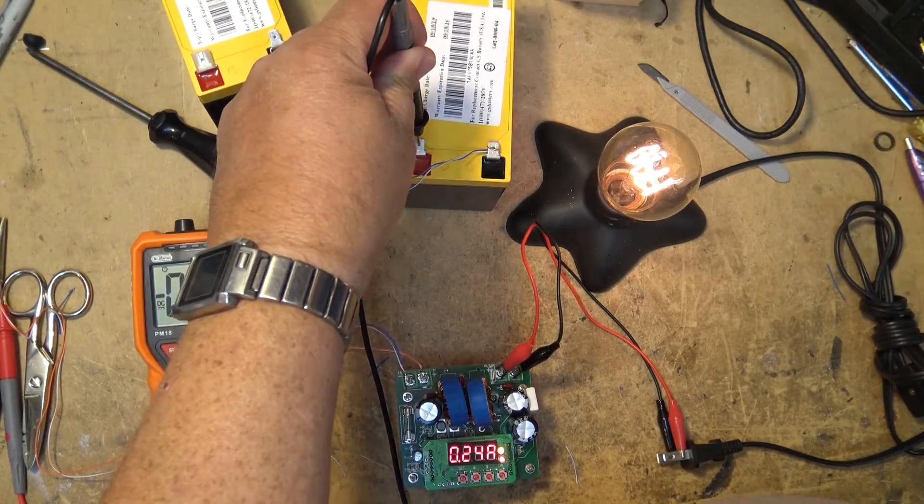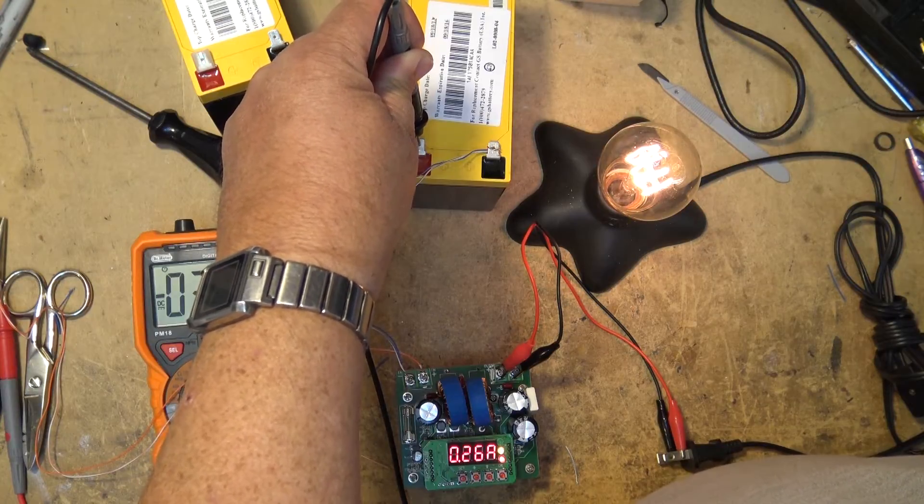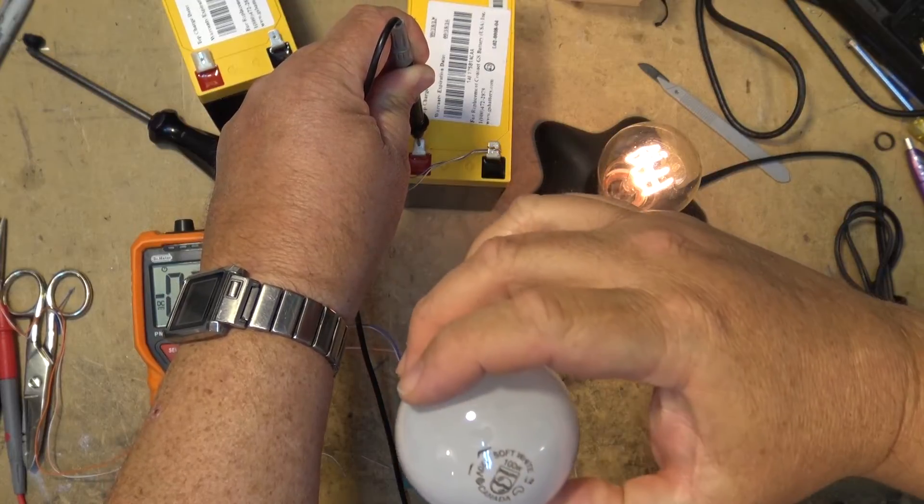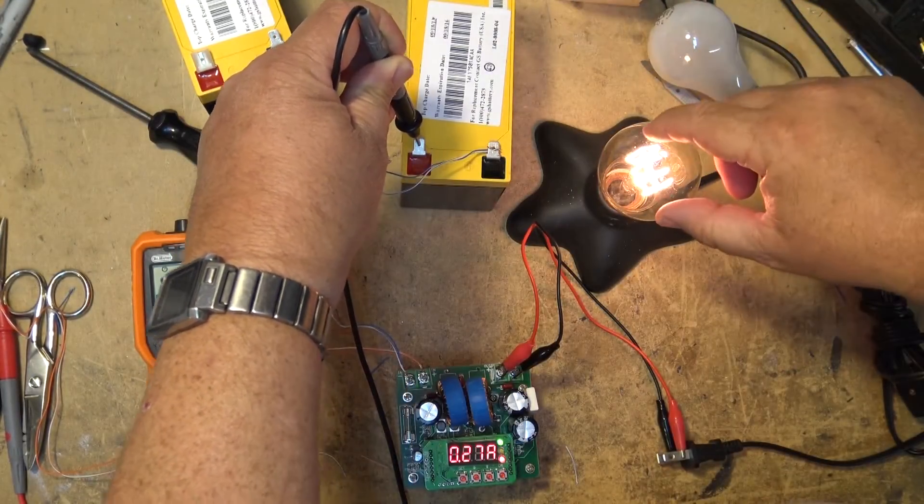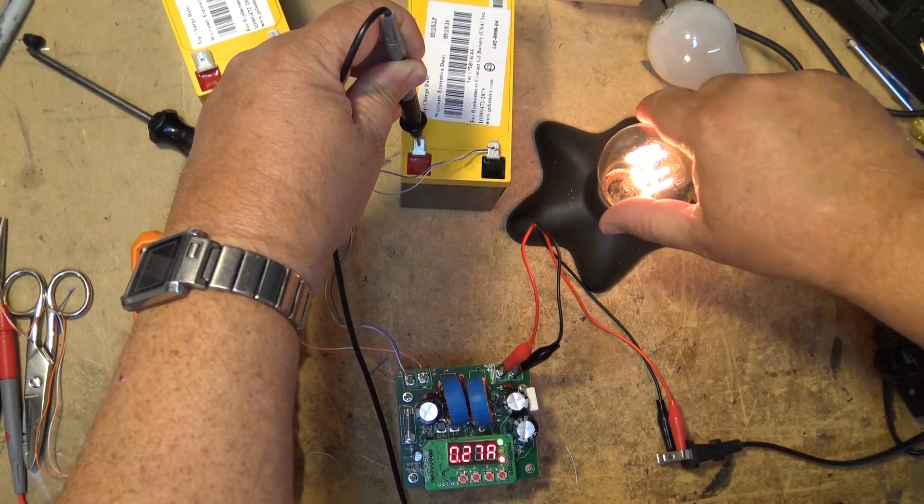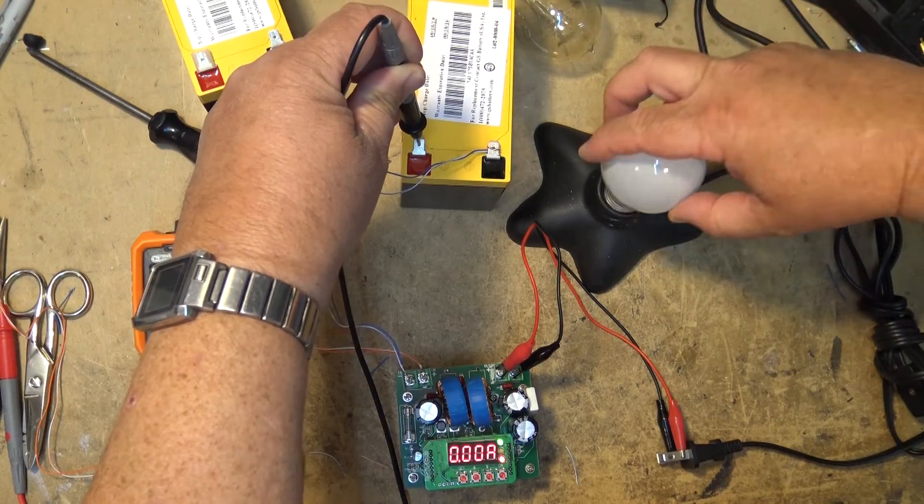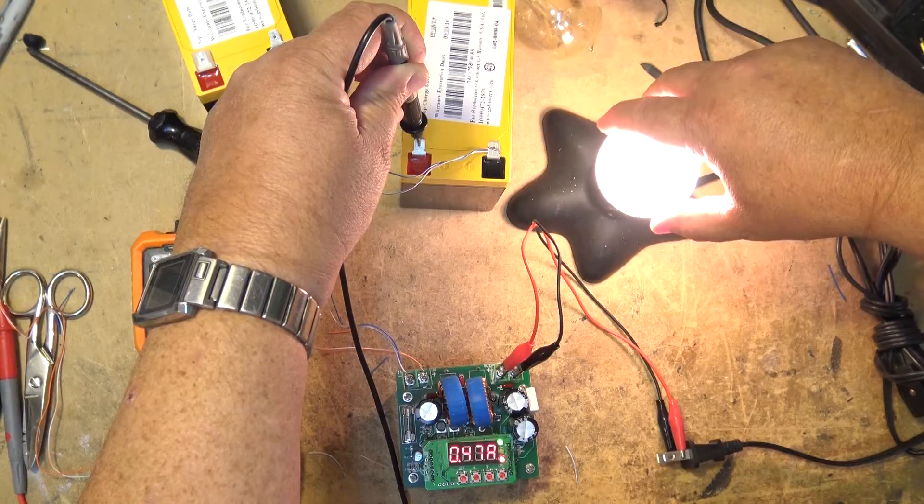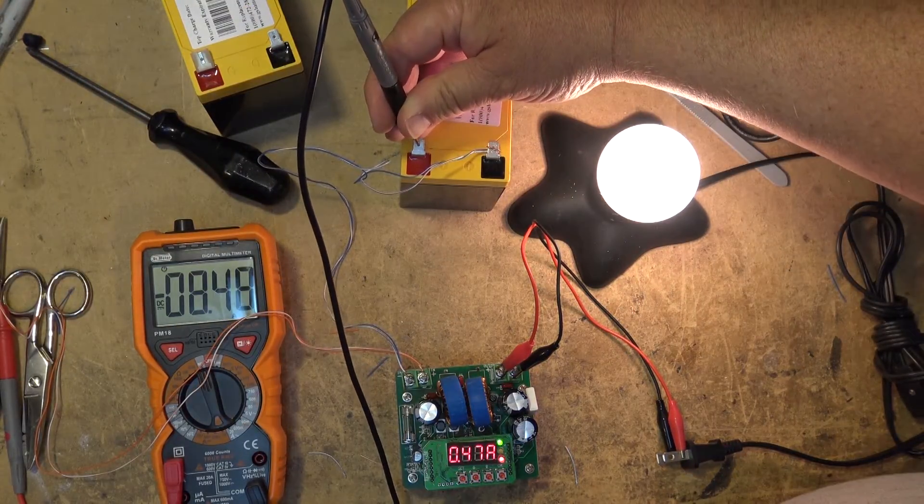I think we need to load this thing down with an even bigger bulb. We have a 100 watt bulb here, one that's rated at 120 volts. The previous bulb was drawing three and a half amps. Let's see how much power this one will draw.